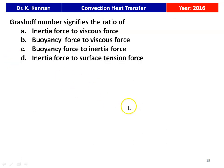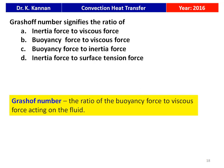Next question from the 2016 paper: Grashof number signifies the ratio of — inertia force to viscous force, buoyancy force to viscous force, buoyancy force to inertia force, or inertia force to surface tension force? Grashof number is defined as the ratio of buoyancy force to viscous force acting on the fluid. The answer is option B: buoyancy force to viscous force.